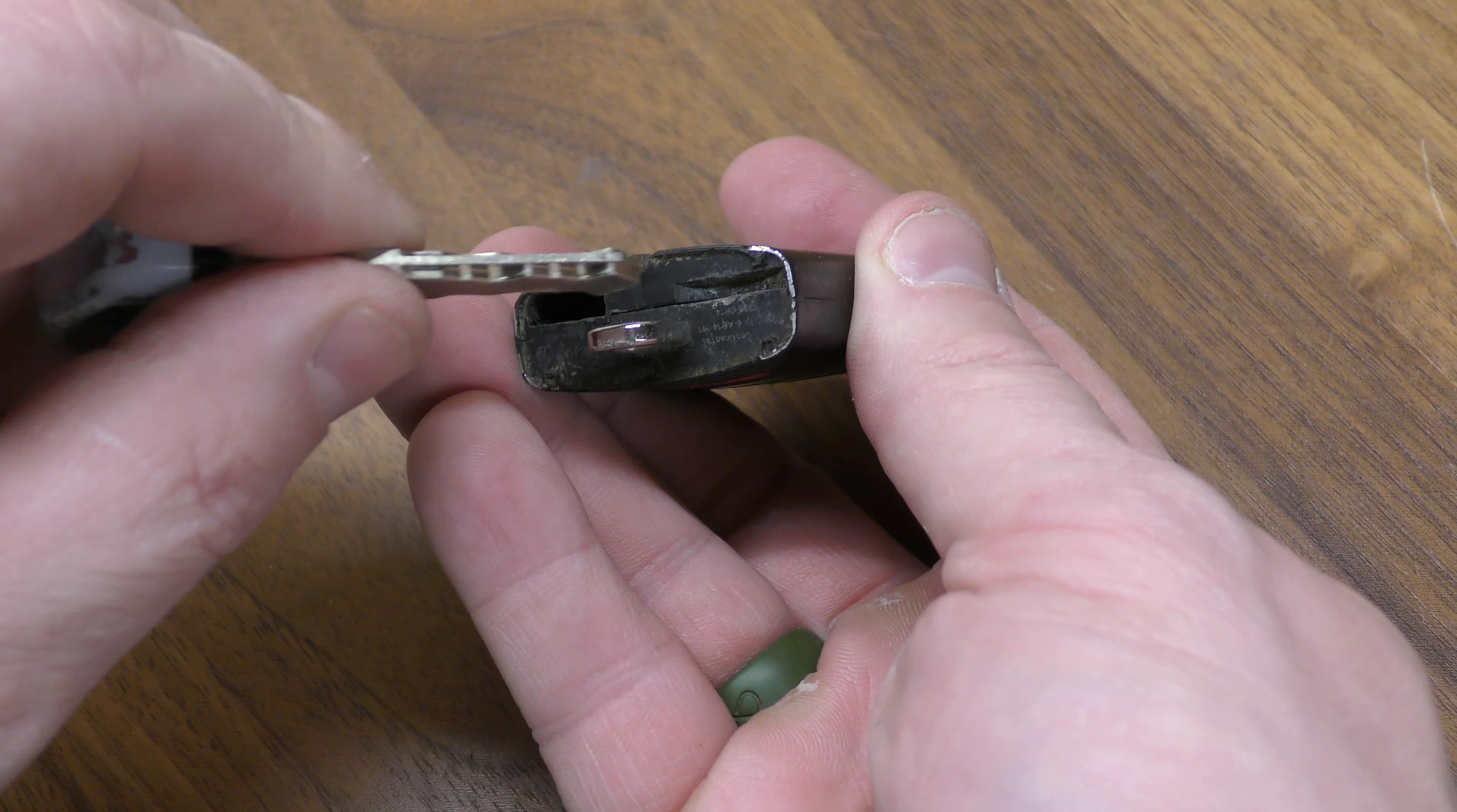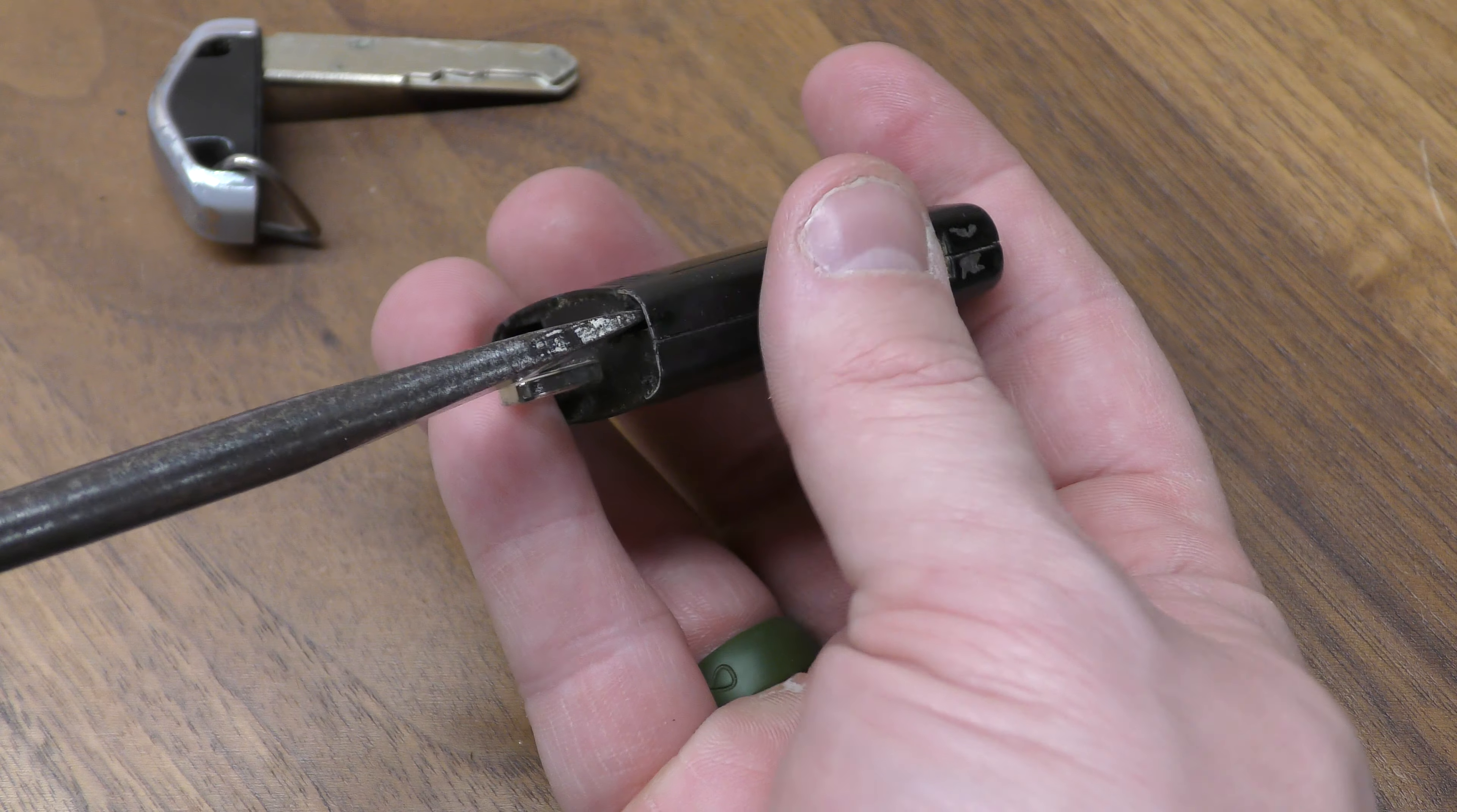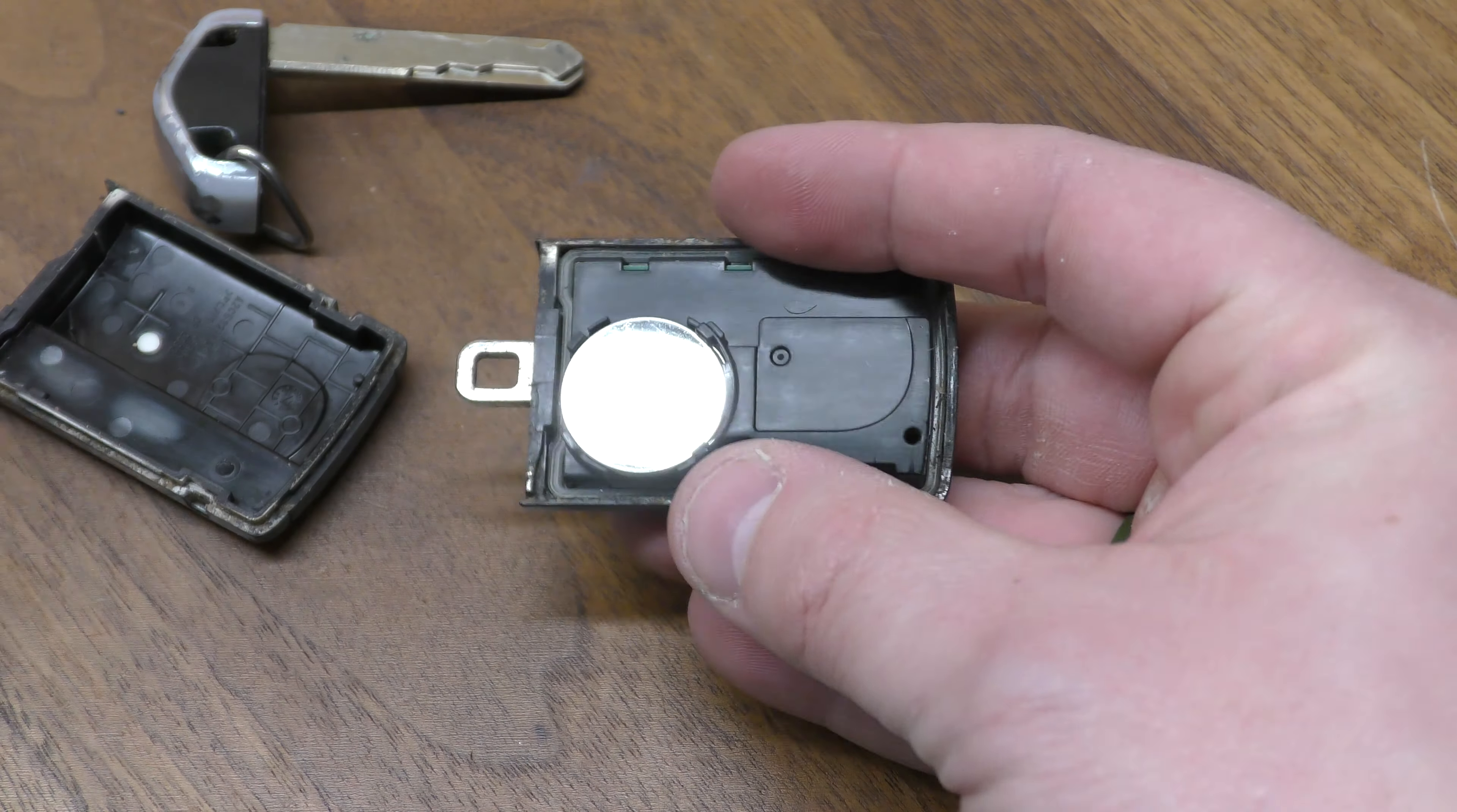Now you can use your mechanical key and insert it right here and pry the two halves apart, but I think a screwdriver does less damage. So insert it there and pry the two halves apart and now you have access to your battery.